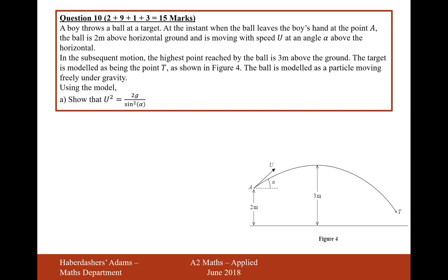A boy throws a ball at a target. At the instant when the ball leaves the boy's hand, point A, the ball is 2 metres above the horizontal ground and is moving with speed U at an angle alpha above the horizontal. In the subsequent motion, the highest point reached by the ball is 3 metres above the ground. The target is modelled as the point T, as shown in figure 4. The ball is modelled as a particle moving freely under gravity. Using the model, show that U squared equals 2G over sine squared alpha.